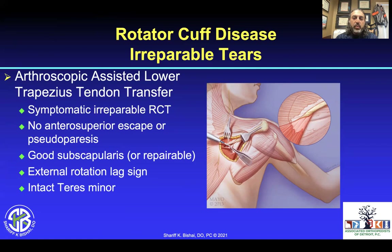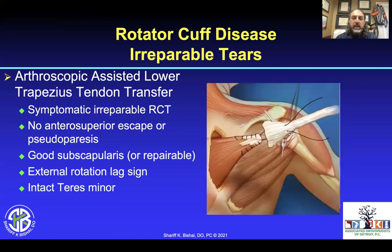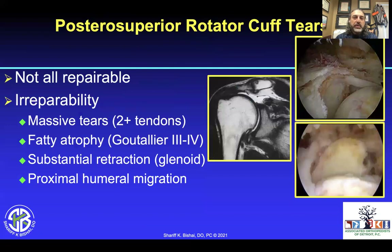Once the lower trapezius is found, you can attach it to an allograft of Achilles tendon. In Europe they're often doing a semitendinosus autograft, but you need to lengthen that tendon to get it to the tuberosity. Posterior superior rotator cuff tears are not all repairable. If they are irreparable and you have massive tears — two-plus tendons, fatty atrophy, Goutallier grades 3 and 4, substantial retraction to the glenoid, and proximal humeral migration — this is an excellent indication for a transfer.